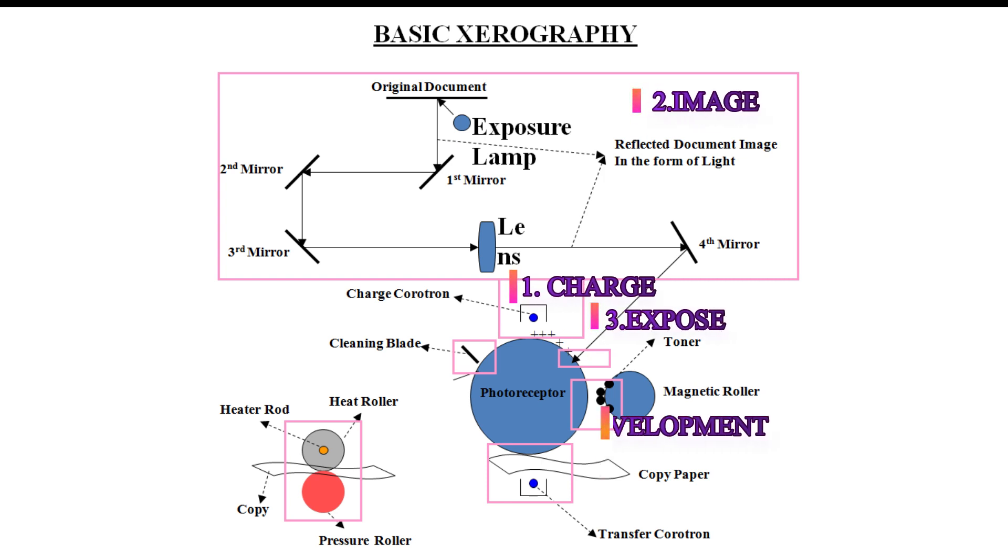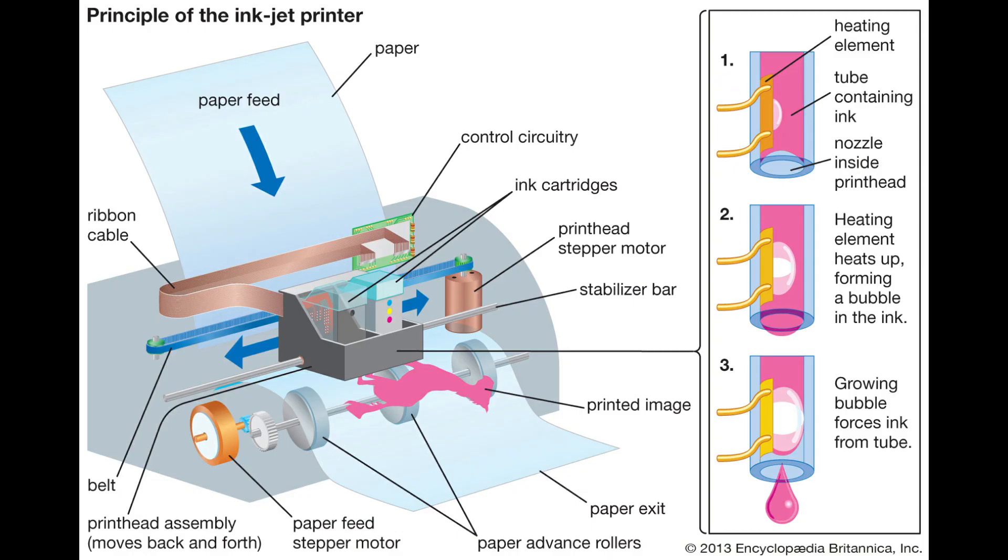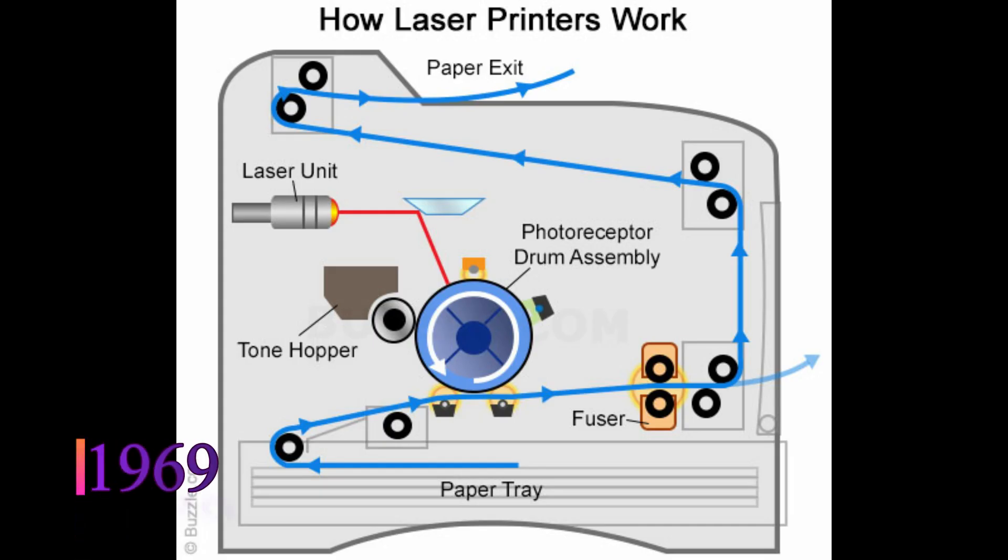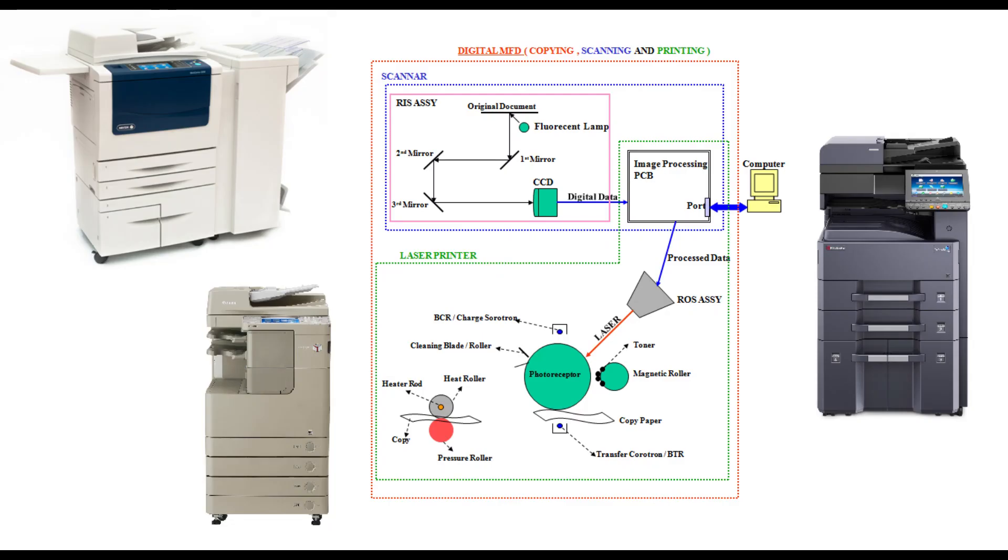These seven steps are the basic process in xerography. Before that, we need to know about inkjet printing technology from 1950, laser printing technology from 1969, and digital printing technology from 1991. In this video we are going to watch analog technology.